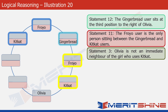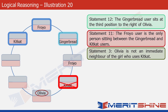Statement 3 tells us that Olivia is not an immediate neighbor of the girl who uses KitKat. This is Olivia here. We can see that if KitKat and Froyo users occupy the boxes highlighted in yellow, then Olivia and the KitKat user would be sitting beside each other, which would violate the condition in statement 3. So that's not possible. The correct positions of KitKat and Froyo users would be the ones in the blue boxes.